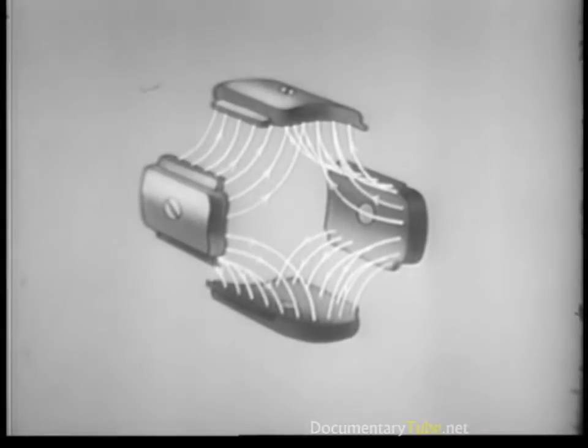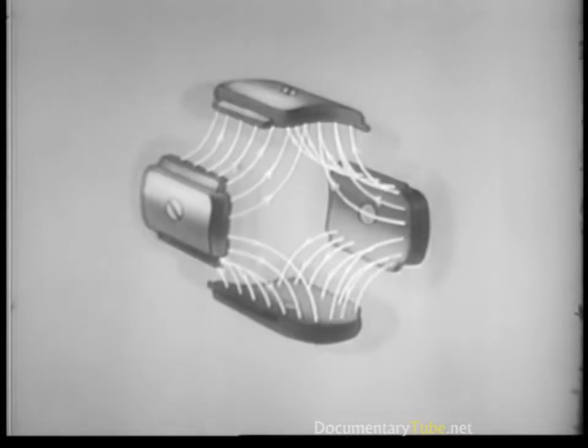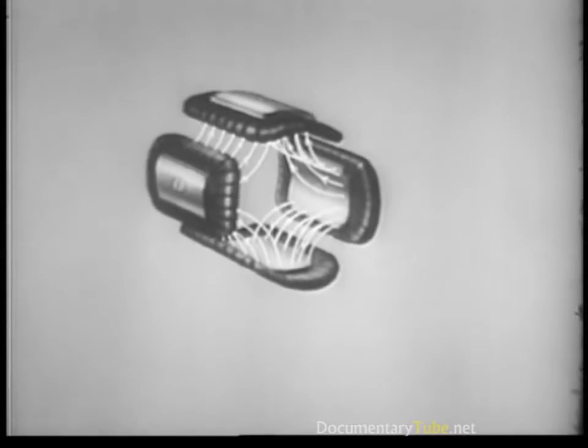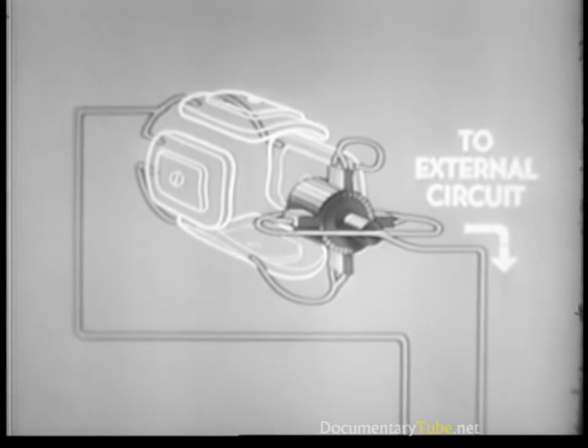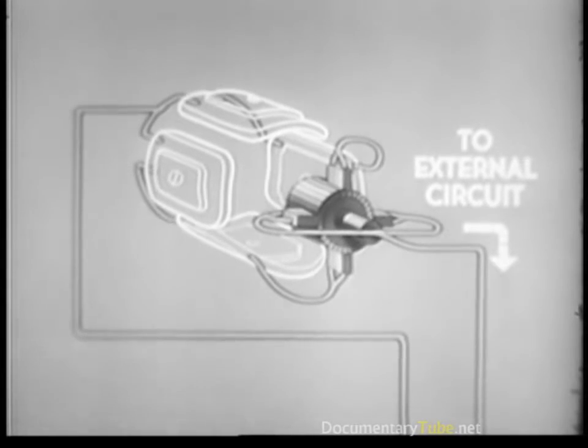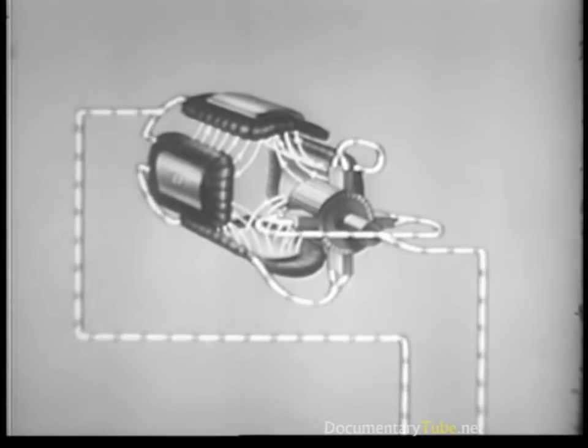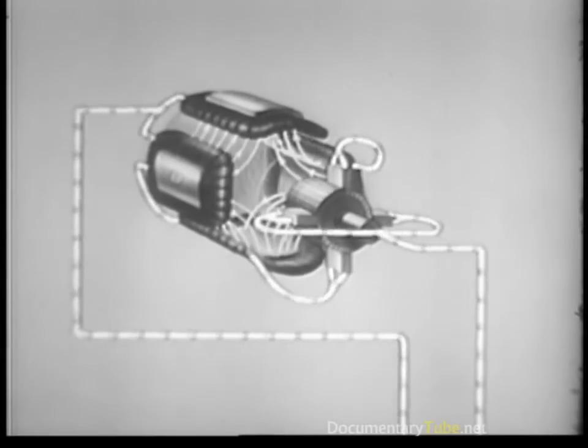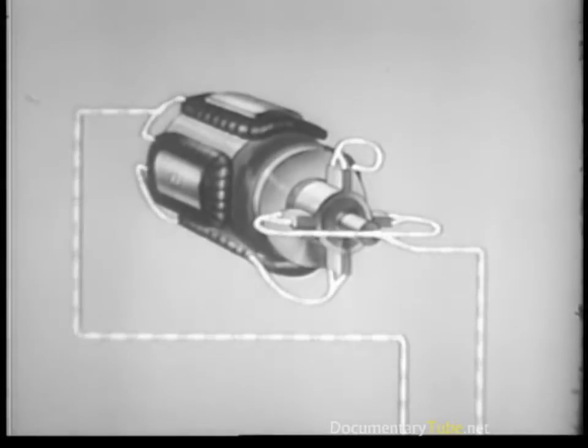Like the generator, pole pieces rather than bar magnets are used for the starting motor. These pole pieces have conductors wound around them. When current flows through, it builds up the magnetic field and the attraction of the poles is sharply increased. This strengthens the turning power of the armature enormously.